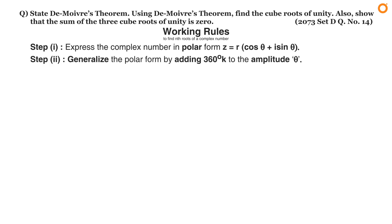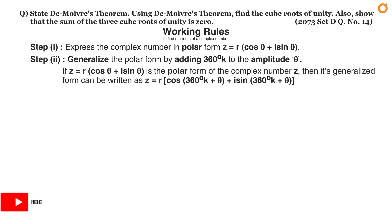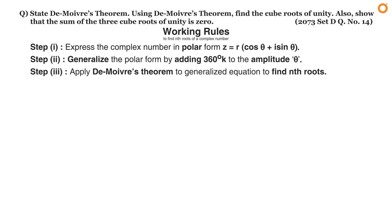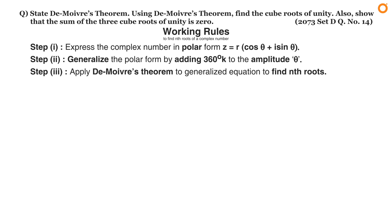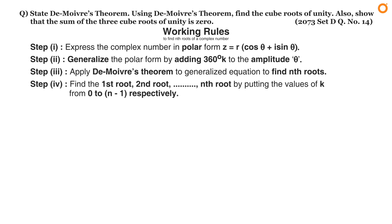In step two, generalize the polar form by adding 360k to the amplitude theta. If z equals r times (cos theta plus i sin theta) is the polar form, then its generalized form is z equals r times (cos(360k plus theta) plus i sin(360k plus theta)). In step three, apply De Moivre's theorem to the generalized equation to find the nth roots. Applying the theorem gives: z_k equals r to the power (1/n) times (cos((360k plus theta)/n) plus i sin((360k plus theta)/n)), where k ranges from 0 to n minus 1.